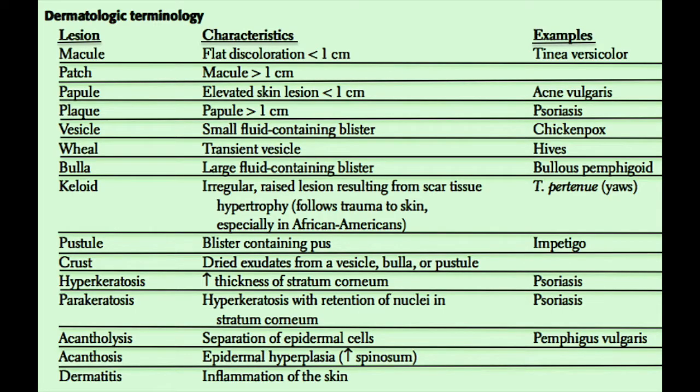So what are the words that dermatologists use to describe different types of lesions? Firstly, we have a macule, which is defined as a flat discoloration less than one centimeter — a common example would be tinea versicolor. Greater than one centimeter, we change the name to a patch, which is again just a flat discoloration but greater than one centimeter.